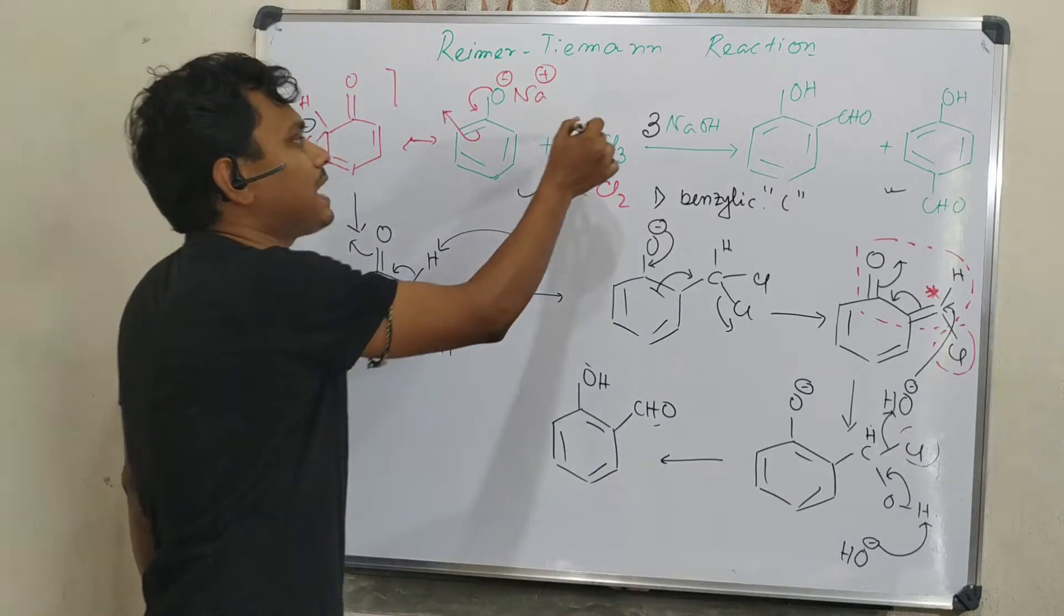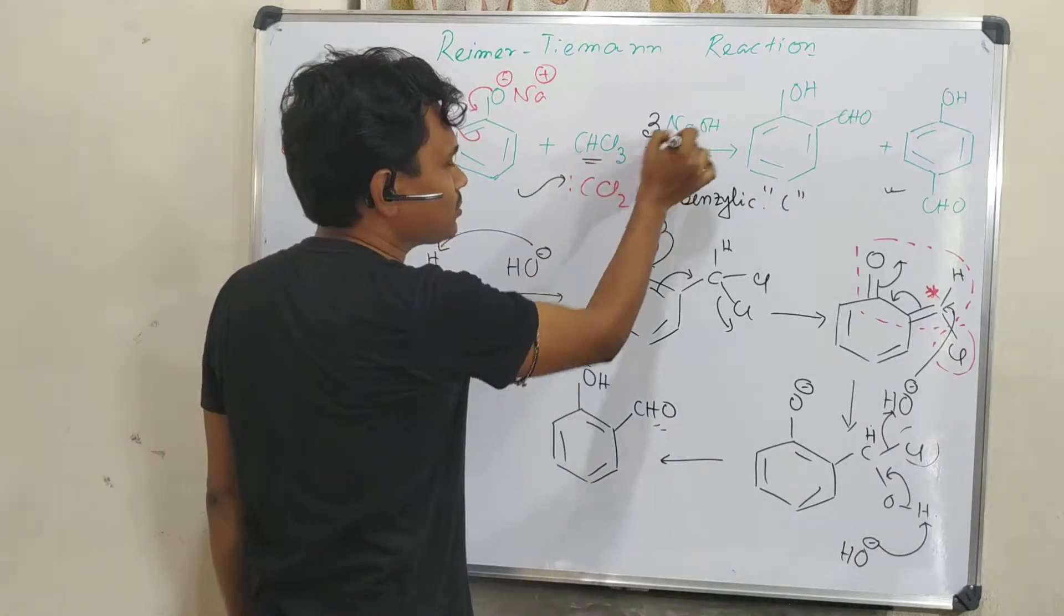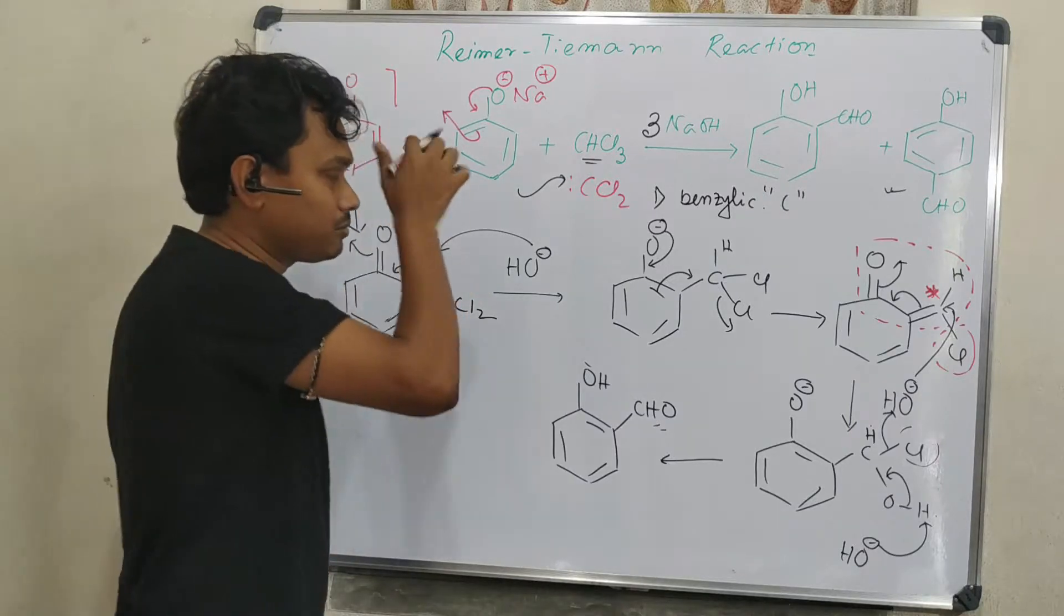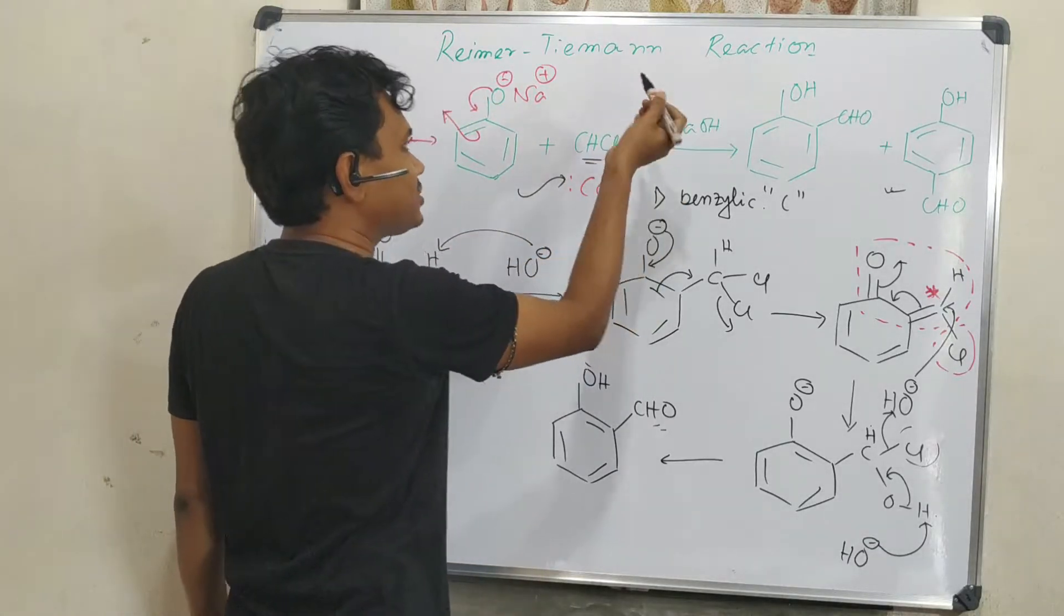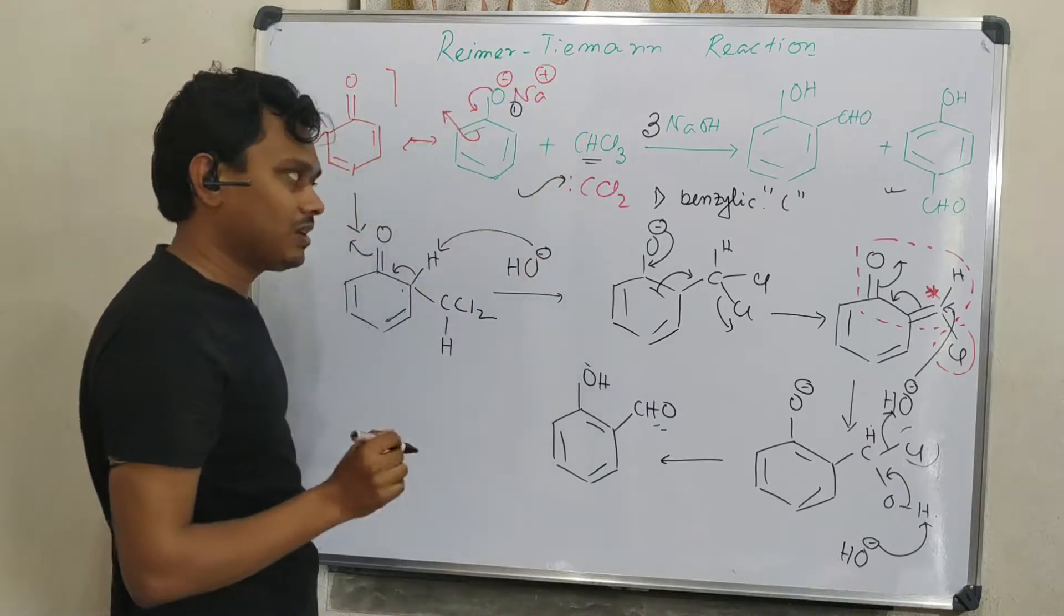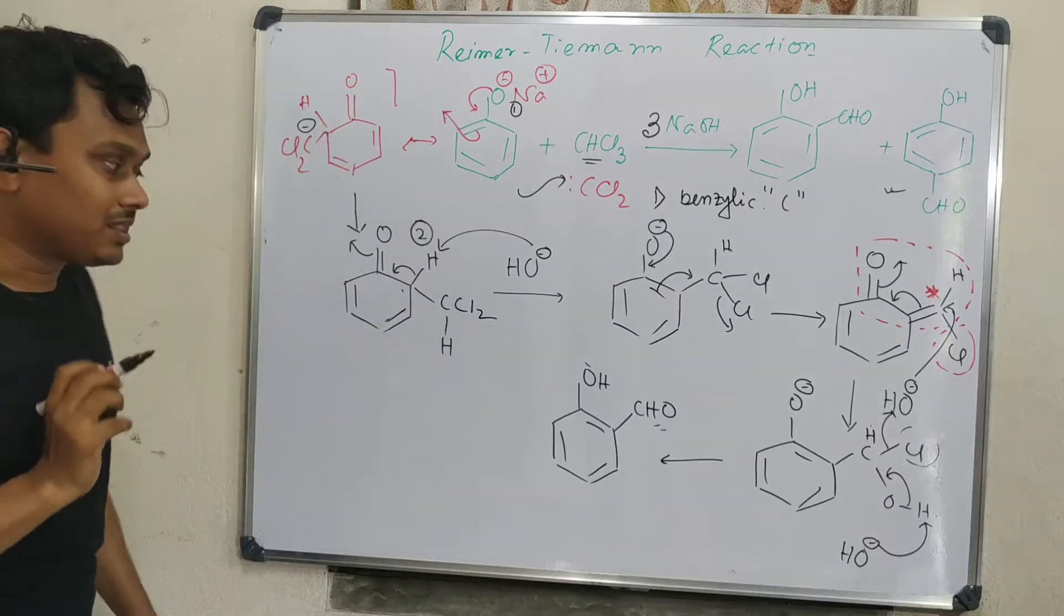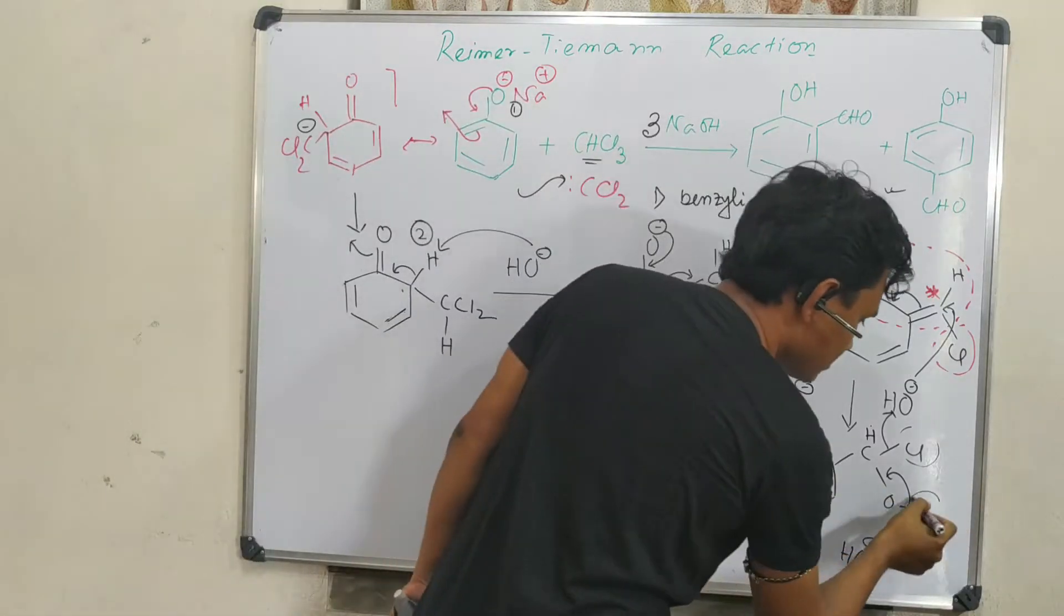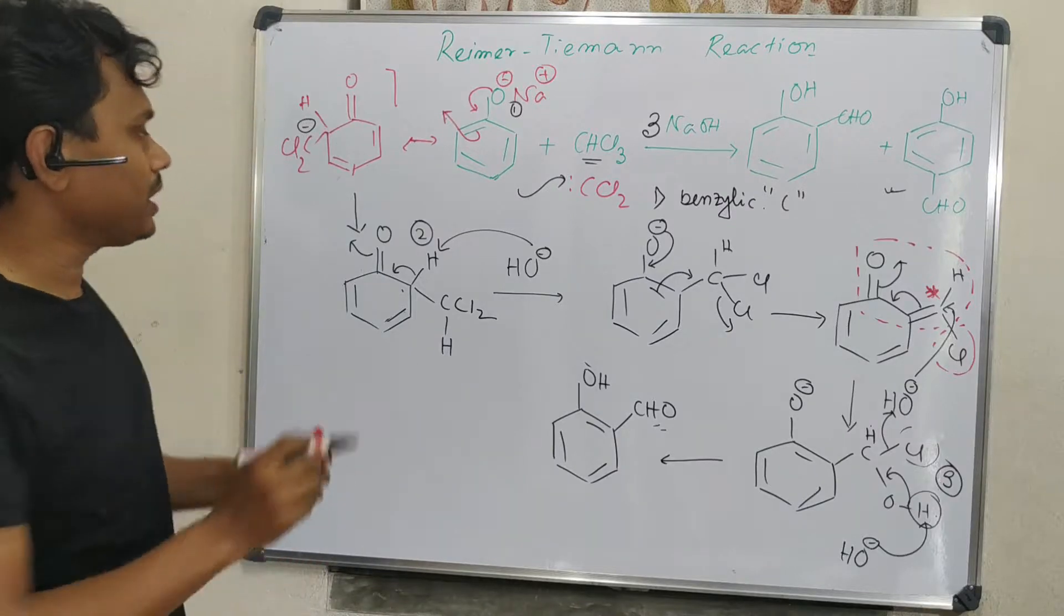You can see that initially there were three chlorines. First, one hydroxyl abstracts the proton from chloroform. Second, hydroxyl abstracts the proton from the aromatic nucleus. And third proton abstraction happens here on the chloroaldehyde intermediate. So in this way, three hydroxyl groups are needed.